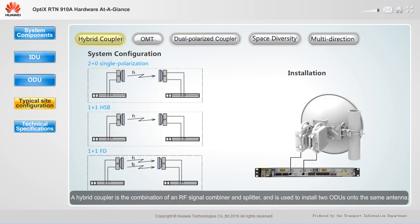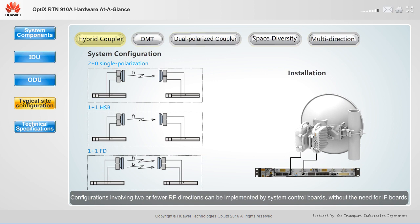A hybrid coupler is the combination of an RF signal combiner and splitter, and is used to install two ODUs onto the same antenna. It can implement various system configurations, such as 2+0 single polarization, 1+1 HSB, and 1+1 FD. Configurations involving two or fewer RF directions can be implemented by system control boards without the need for IF boards. These configurations require a system control board, 2 ODUs, a hybrid coupler, and a single polarized antenna.